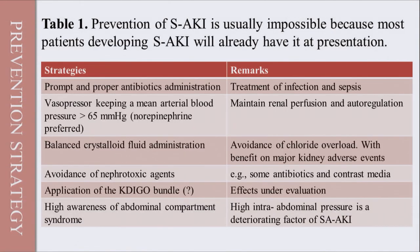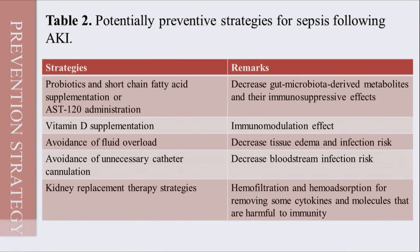Prevention of sepsis-associated AKI is quite difficult because the patient may already be developing AKI. However, with prompt diagnosis and proper antibiotic administration, vasopressor use, maintaining mean arterial pressure above 65 mmHg, balanced crystalloid fluid administration, awareness of abdominal compartment syndrome, and avoidance of nephrotoxic agents, we can prevent further deterioration.